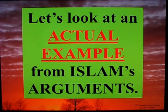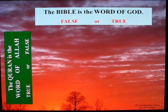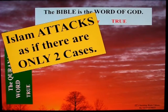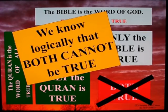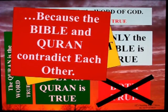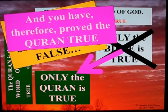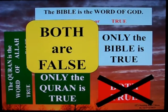Let's look at an actual example from Islam's arguments. Statement one: the Bible is the word of God — true or false. Statement two: the Quran is the word of Allah — true or false. Islam argues as if there are only two cases: only the Bible is true, or only the Quran is true. We know logically that both cannot be true because the Bible and the Quran contradict each other. So Islam thinks: attack the Bible and prove it false, and you have therefore proved the Quran true. This is because Islam's thinking is logically incomplete and misses the fourth case — both are false.